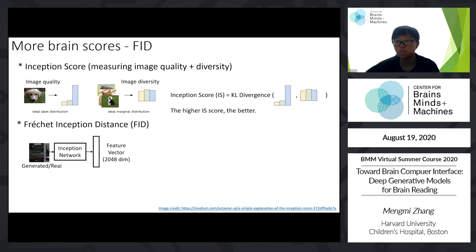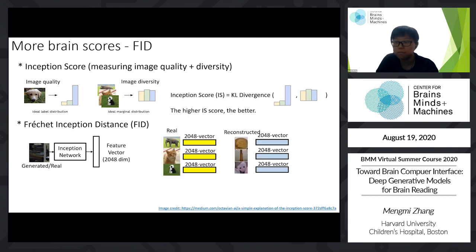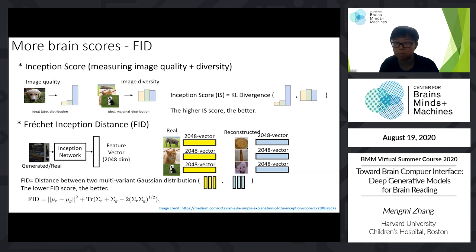Note that Inception Score ignores information about real images — it only evaluates quality and diversity of generated images without comparing to real ones. Therefore, we propose a new metric: Fréchet Inception Distance (FID). For both reconstructed and real images, we use Inception net to extract feature vectors, giving a pair of feature vectors for each real and generated image pair. FID calculates the distance between these two distributions — a better brain reader gives a lower distance score. Mathematically, FID calculates the distance between the mean vectors and the trace of their covariance differences.